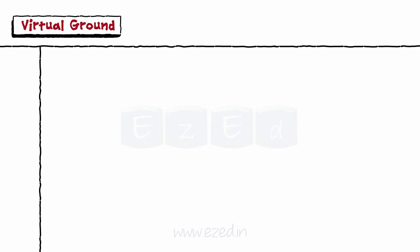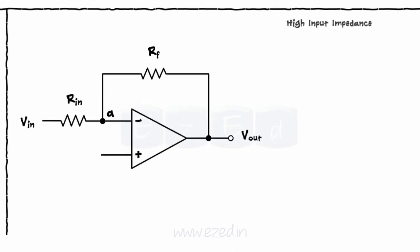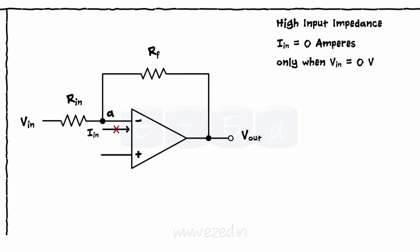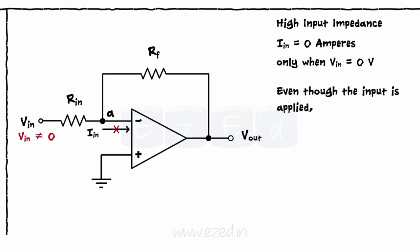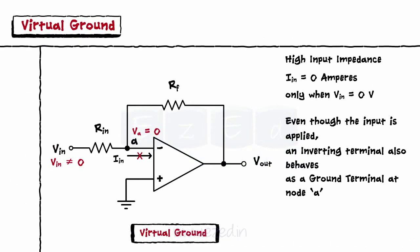Let's study the virtual ground concept. The input impedance of an op-amp is very high, hence an op-amp never draws any current at its input — input current is always zero amperes. For current to be zero, the voltage must be zero. If some input is applied to the inverting terminal while keeping the non-inverting terminal at ground, the inverting terminal also behaves as a ground terminal at node A. This concept is called the virtual ground concept.